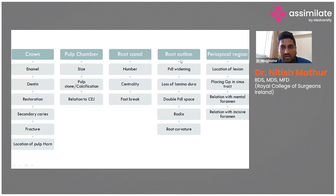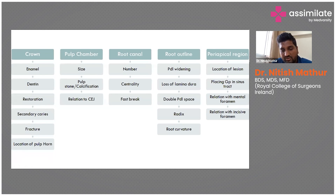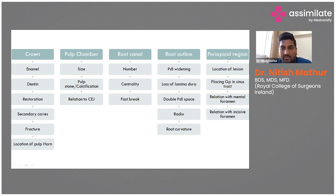The radiographic roadmap is: first the crown, then the pulp chamber, then the root canal, then the root outline, then the periapical region, then the surrounding structures. In the crown, the most commonly missed findings are the location of the pulp horn and secondary caries. In the pulp chamber, we miss its relation to the CEJ — knowing this helps determine how far the bur should go to find the orifices. In root canals, we miss fast breaks and centrality. In the root outline, we get confused with double PDL space. In the periapical region, we should always place a GP point to trace the sinus tract whenever one is present.